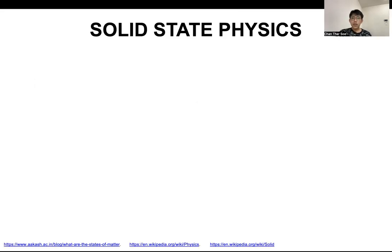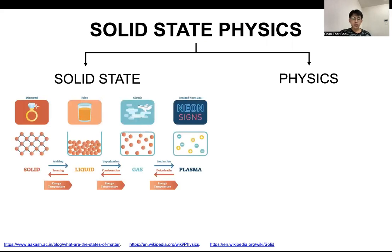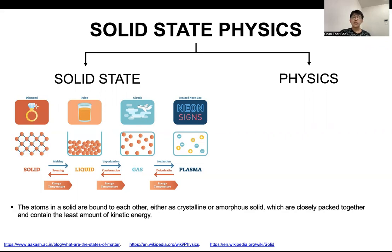Let's talk about solid-state physics. In the name itself, there are two portions: solid-state and physics. What is solid-state? In materials, there are many different states — solid-state, liquid-state, gas-state, and plasma state. The difference between them is the arrangement of the atoms, which defines what state the material is in. In the solid-state, atoms are bound to each other, either in crystalline or amorphous forms, closely packed together and containing the least amount of kinetic energy.